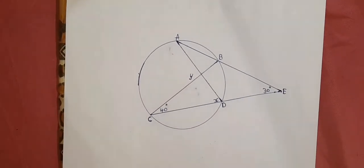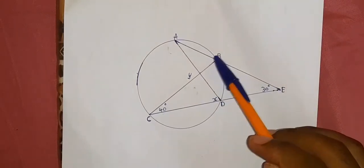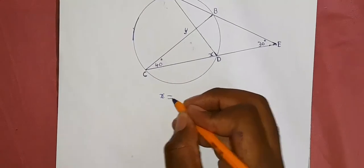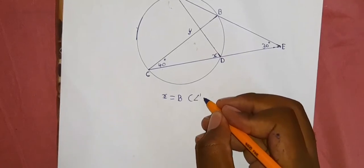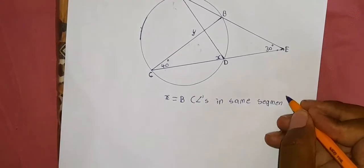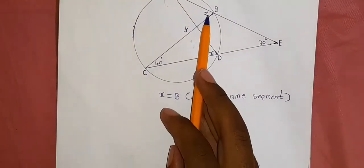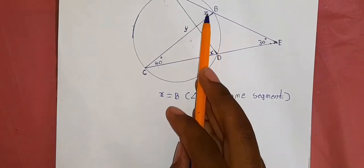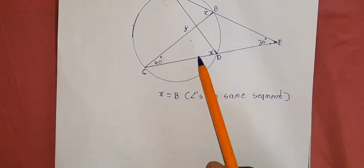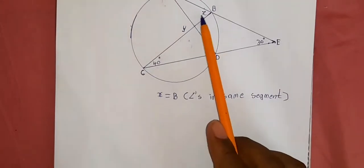So how do we find angle x and y? When I looked at this, I realized that angle x is equal to angle B because they are angles in the same segment. But what is angle B here? Not the whole angle B — only this portion of angle B. We know it is equal to the sum of the opposite interior angles, because this angle here is the exterior angle of this triangle.